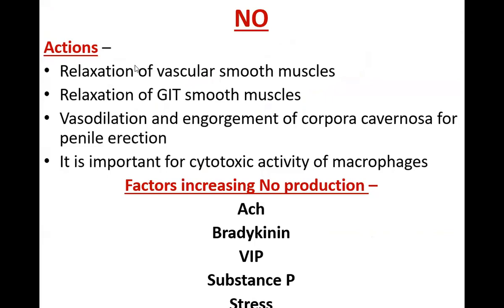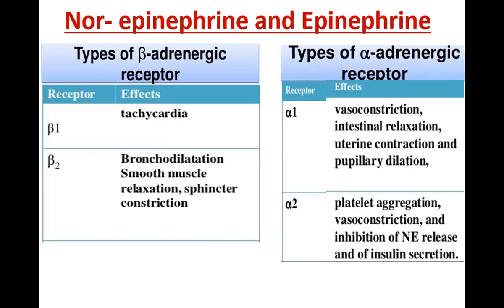Nitric oxide production is enhanced by acetylcholine and VIP. Its effects are: relaxation of vascular smooth muscles, relaxation of GIT smooth muscles, vasodilation and engorgement of corpora cavernosa for penile erection, and it is important for cytotoxic activity of macrophages. Nitric oxide production is mainly enhanced by acetylcholine, bradykinin, and VIP. Whenever there is stress to the endothelium due to increased blood pressure, nitric oxide production is stimulated. Nitric oxide is a potent vasodilator; other vasodilators are bradykinin and histamine.